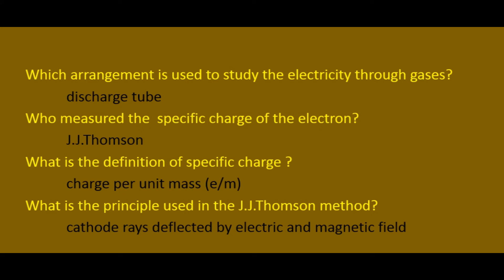Which arrangement is used to study electricity through gases? The discharge tube. Who measured the specific charge of the electron? JJ Thomson. What is the definition of specific charge? Specific charge means charge per unit mass — charge e divided by mass m.